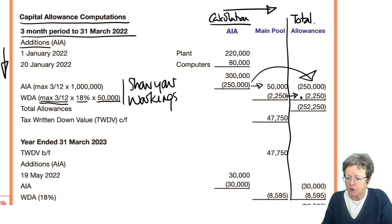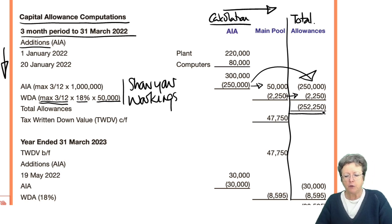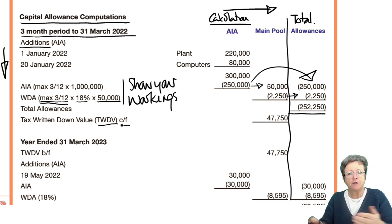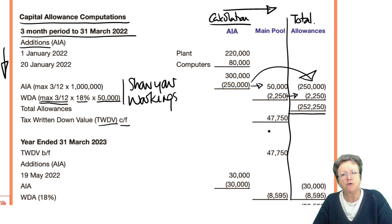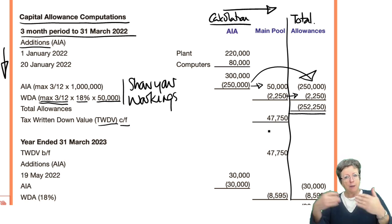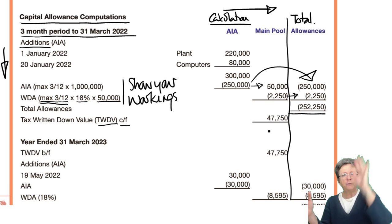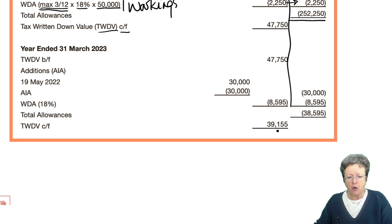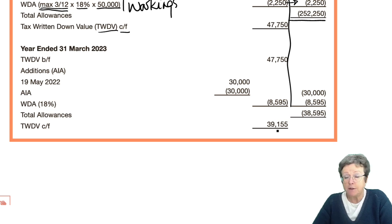That £2,250 goes into the total column and that's our total to be deducted from the adjusted trade profits. We have a tax written-down value carried forward to the next year of £47,750. So next year we put in our additions, take away any disposals, and do our written-down allowances. In March 2023, we have a tax written-down value brought forward of £47,750.